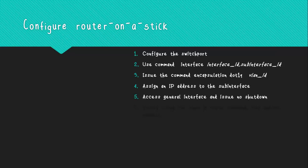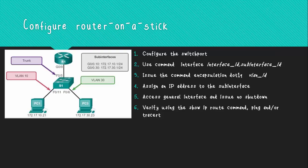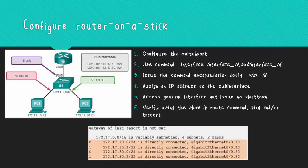This is done because subinterfaces cannot be enabled manually one by one. However, if a VLAN becomes unused, you can issue the 'shutdown' command at the proper subinterface to take down that specific VLAN. The last step is to issue the 'show ip route' command, or use ping or traceroute, to test connectivity and verify that the subinterfaces were properly created.